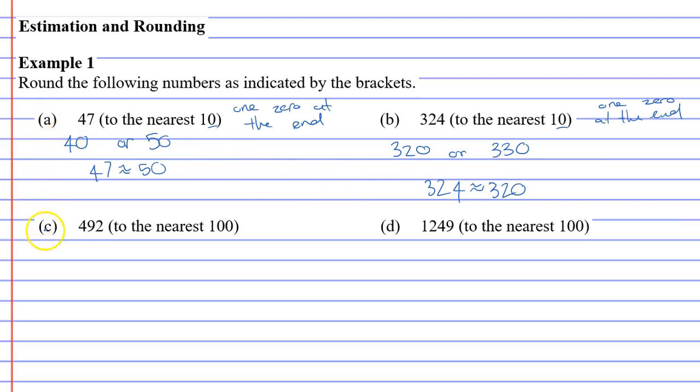Moving on to question C, this time you'll notice it says to the nearest 100, which has two zeros, so our solution should have two zeros at the end.